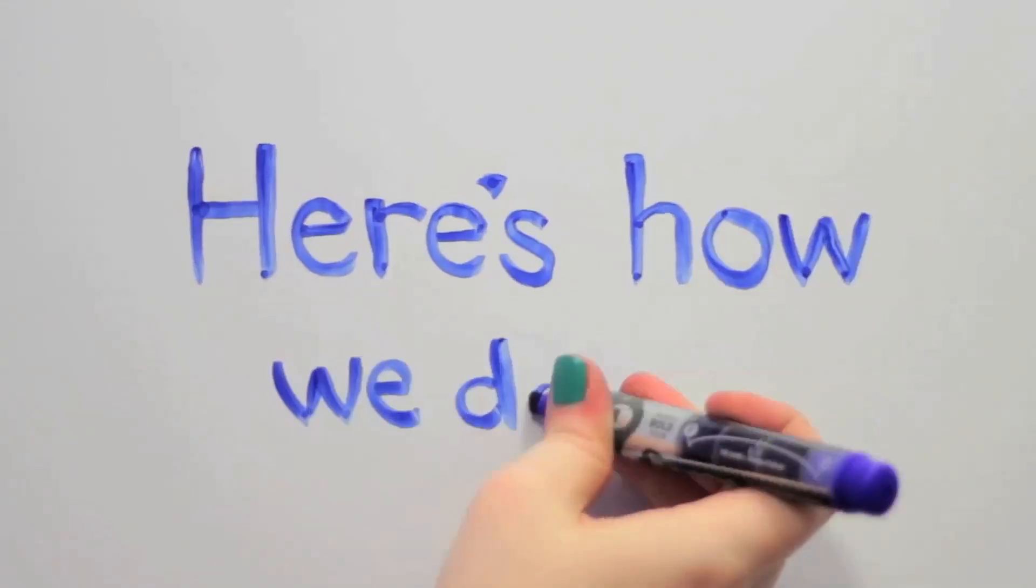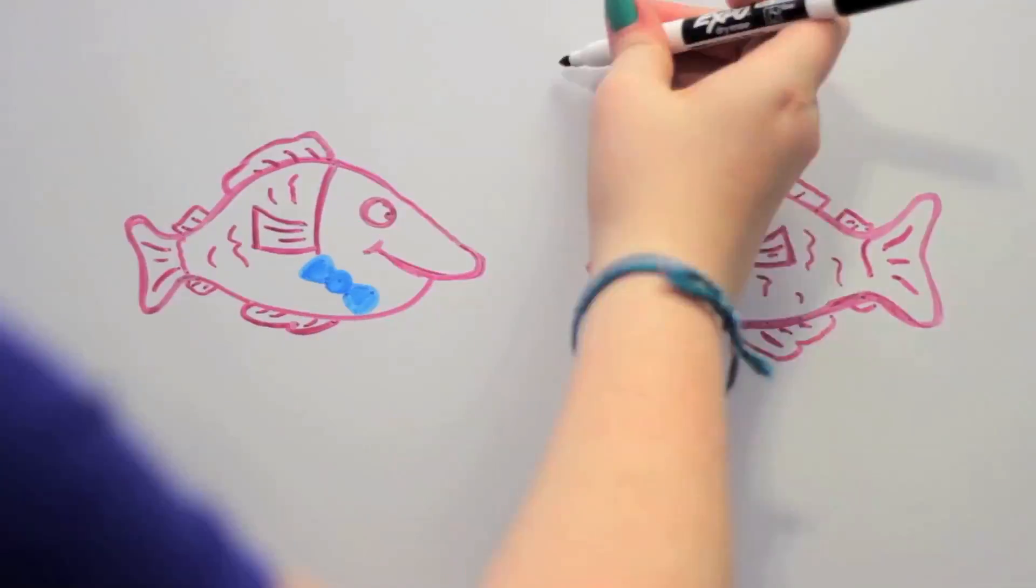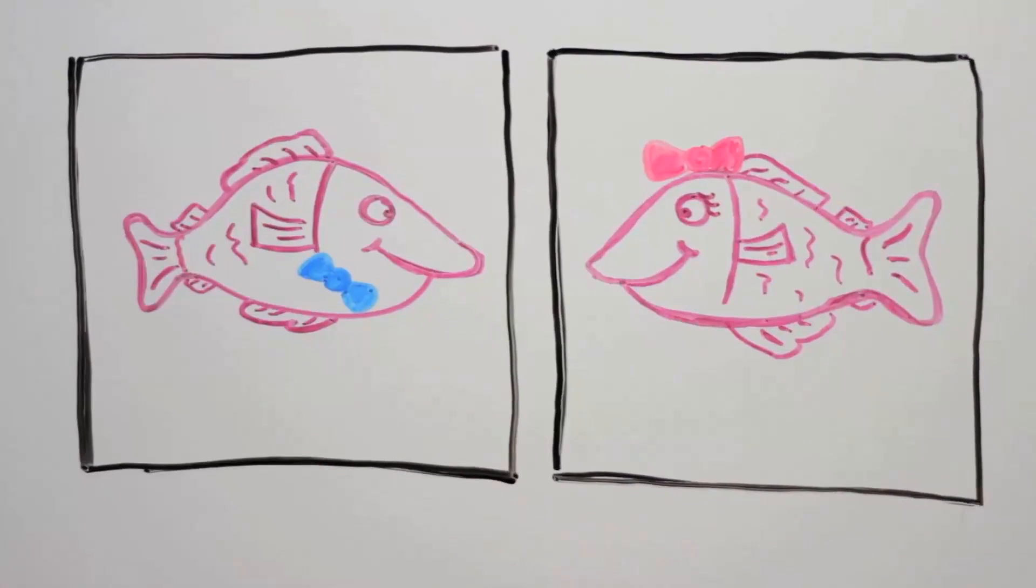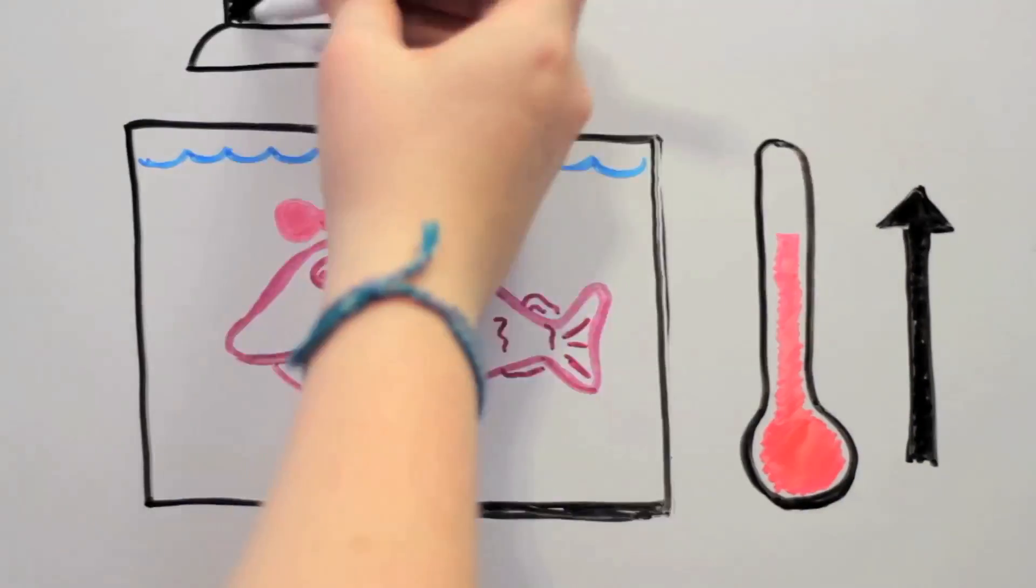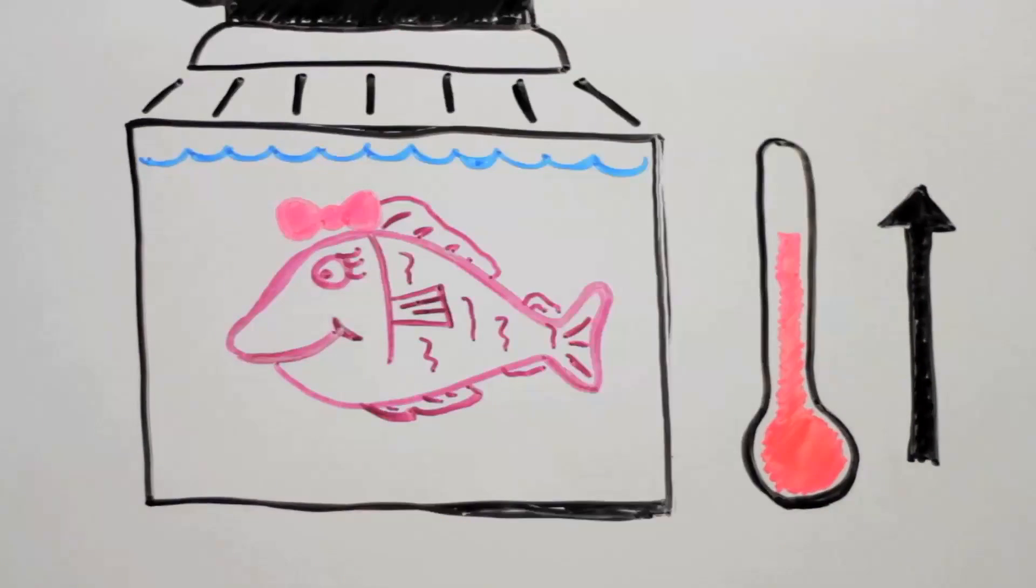So here's how we do it. We start with a handful of adult tilapia that will be our mommies and daddies. We keep the males and females separate so that we can control when they produce babies. When we're ready, we prepare the females by warming up their water and giving them more light. This gets them ready to have babies.